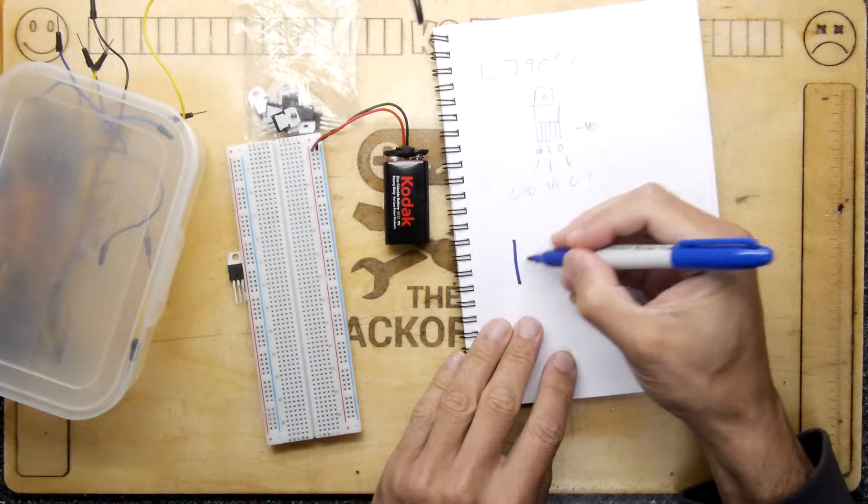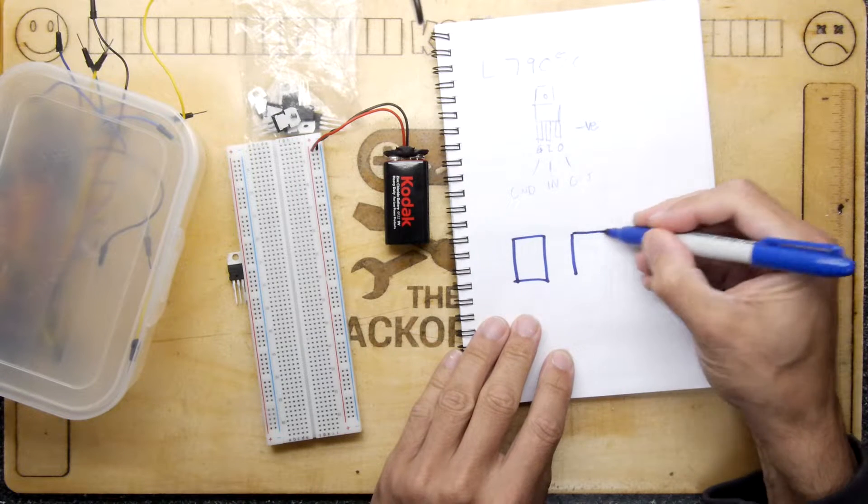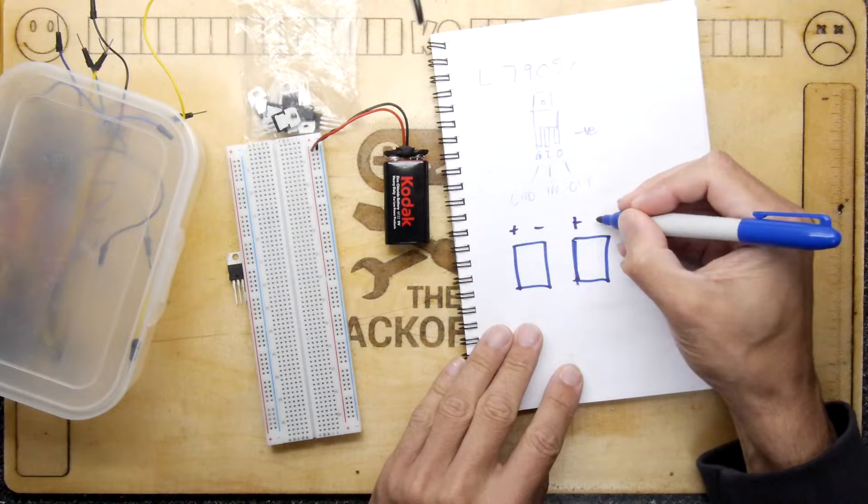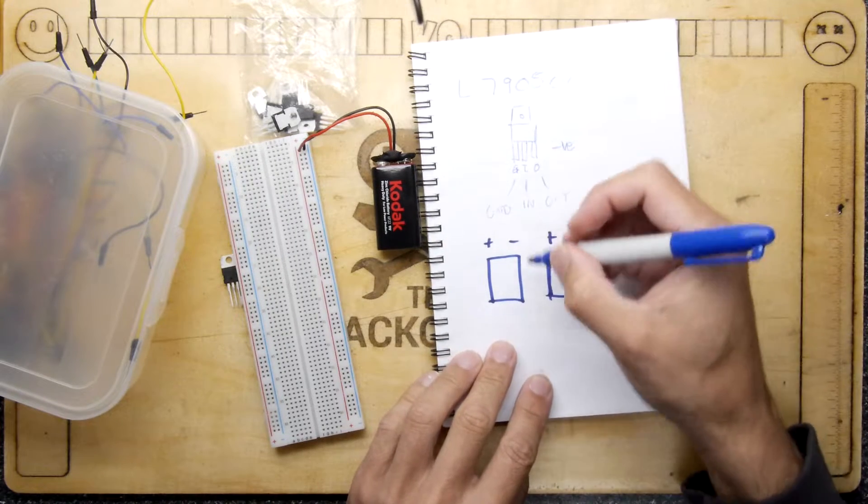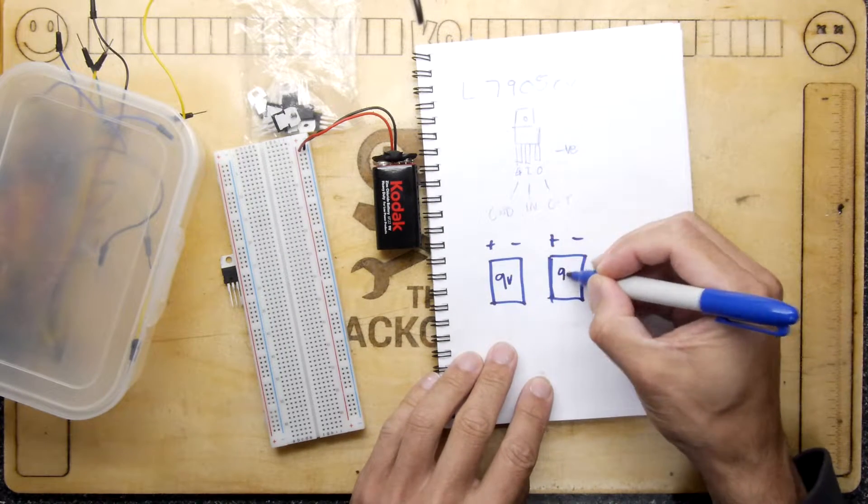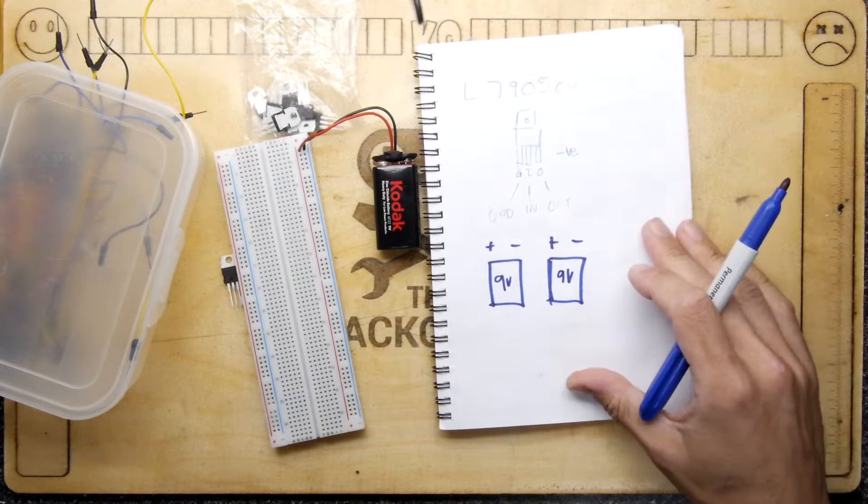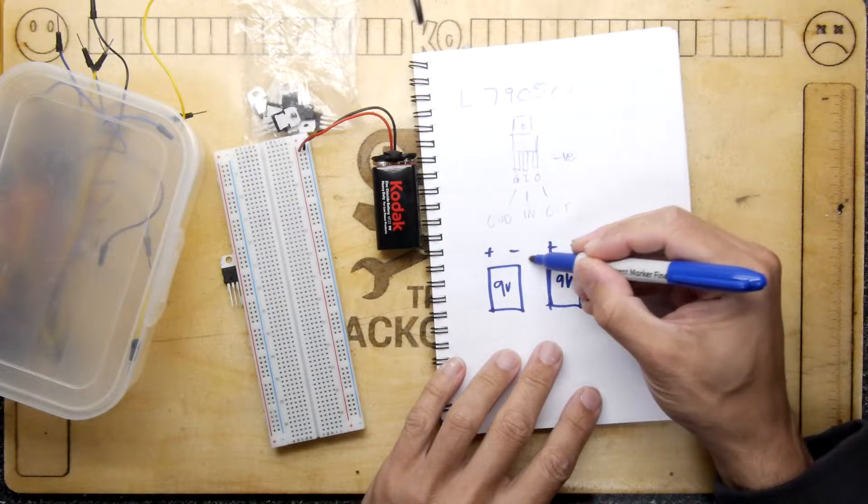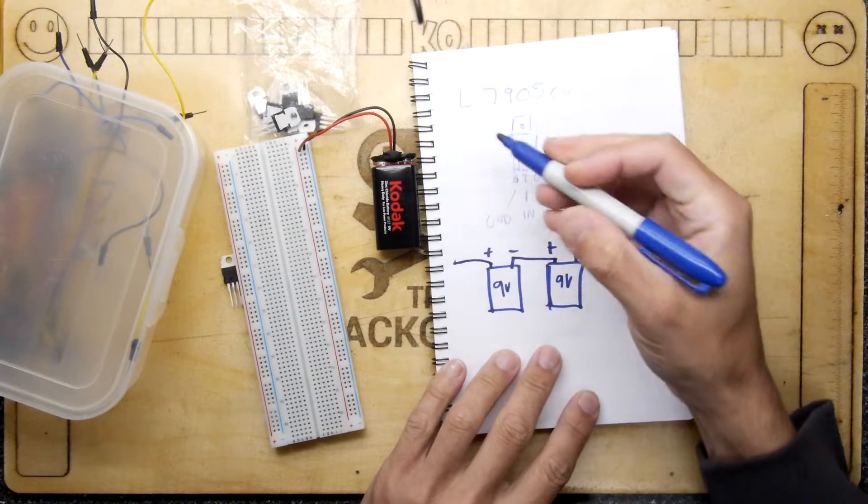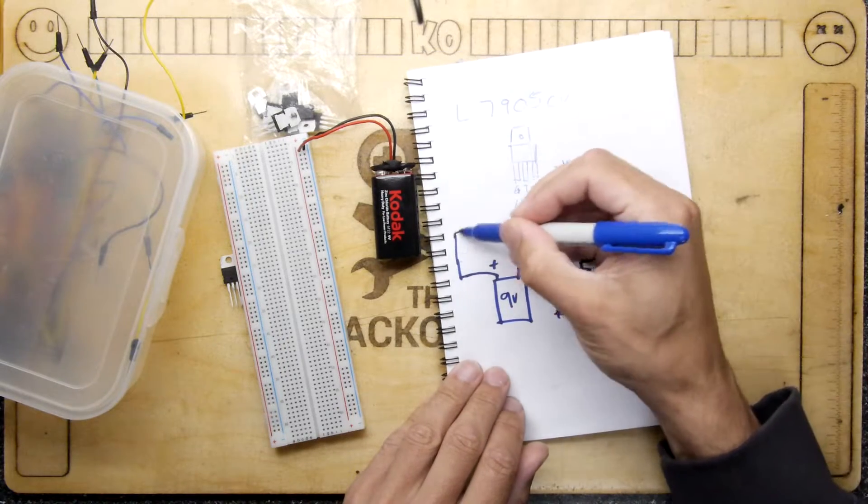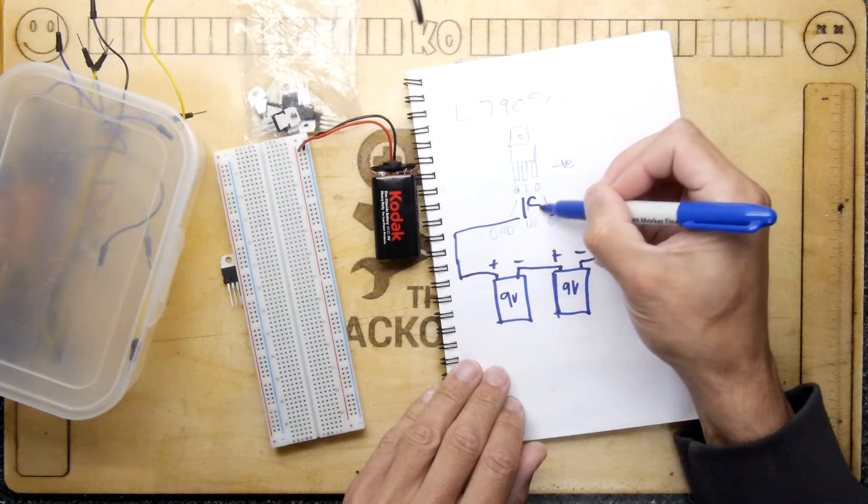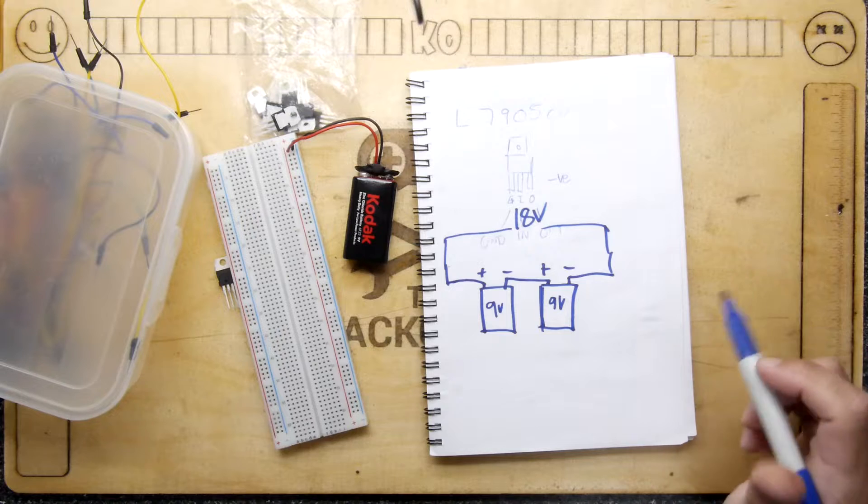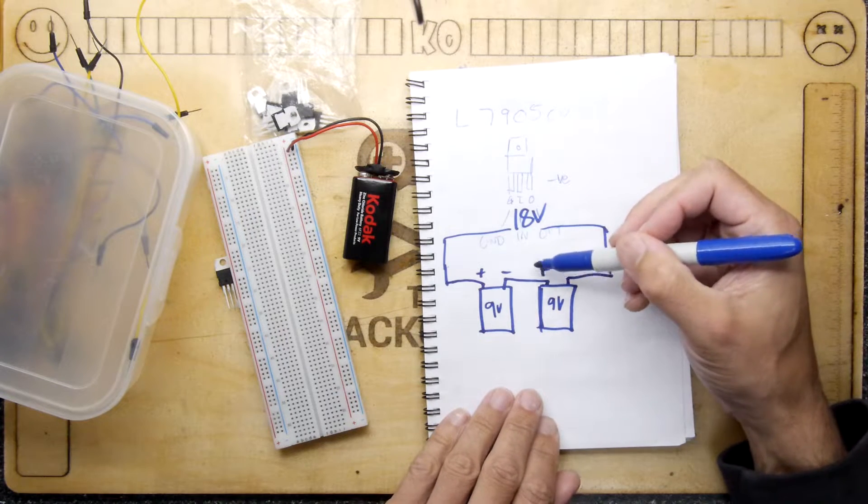The idea is if you have two batteries here, and these were 9-volt batteries, depending on how you join them, if you join them in series so you've got a connection like that, measured from here to here will give you 18 volts, and I think we're all pretty clear on that.